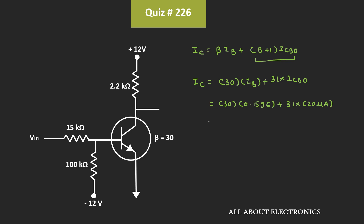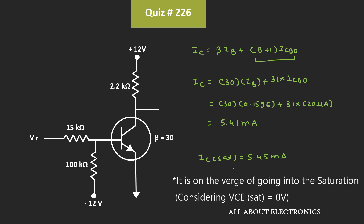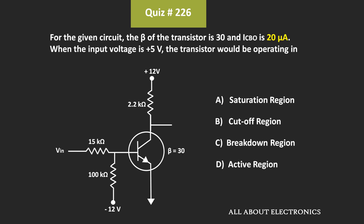That means the collector current Ic is equal to 5.41mA. The value of IC(sat) is equal to 5.45mA. That means the collector current Ic is less than IC(sat). Therefore, the transistor should operate in the active region. We can confirm that the given transistor is operating in the active region.